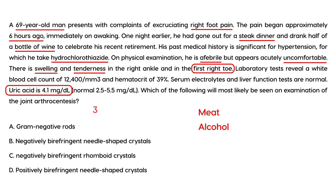Uric acid levels are normal, which can occur in about 30% of cases. What they're asking is: if you aspirate the synovial fluid and look at it under a light microscope, what will it look like? The answer is negatively birefringent needle-shaped crystals. That eliminates other answer choices, making the answer B.